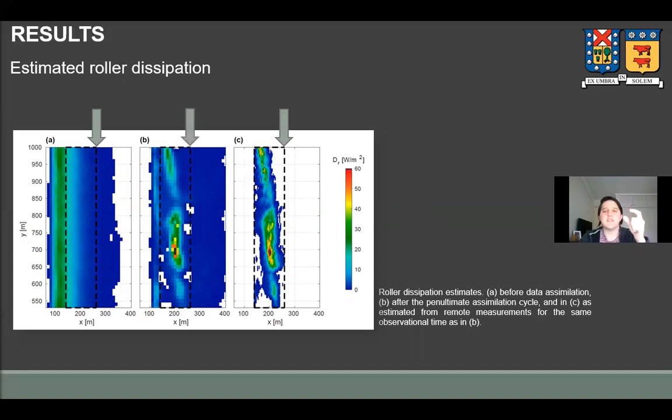Thus, the system doesn't need to update bathymetry for the model to predict zero dissipation in that region. And this is an actual limitation of our approach, which is that inverted depths are not uniquely defined where observed dissipation is zero. But in that region, namely outside the surf zone, another method could be easily coupled to get a full nearshore estimate.